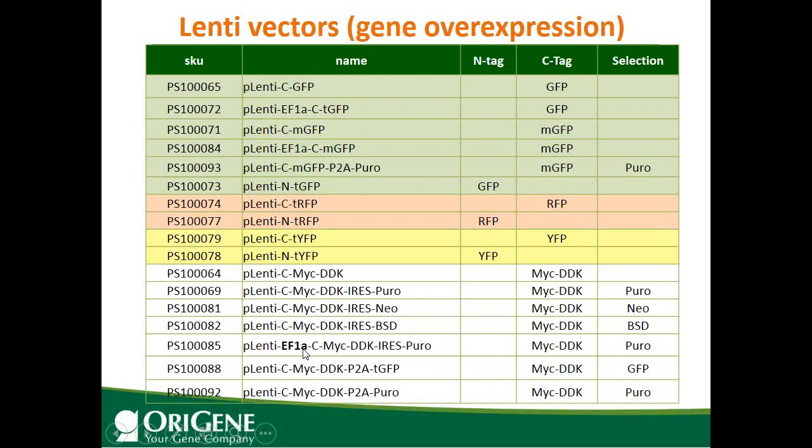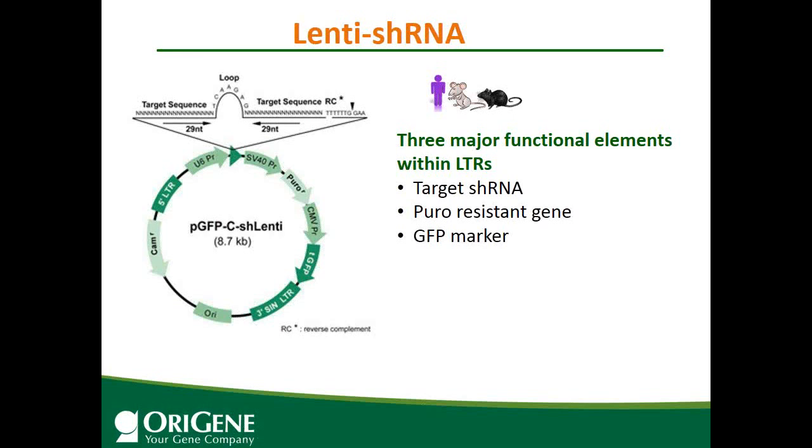Available selection markers include Neomycin and Blasticidin, and one vector is under the EF1A promoter. The ORF can be easily shuttled into any of those vectors.